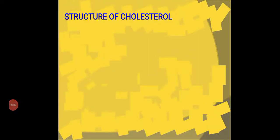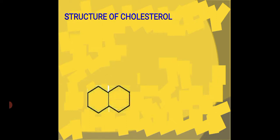Now let us try to draw the structure of a cholesterol molecule. I'm going to tell you a story of a few brothers. The first one is here, represented by a hexacycle. And his sibling is here, represented by another hexacycle.